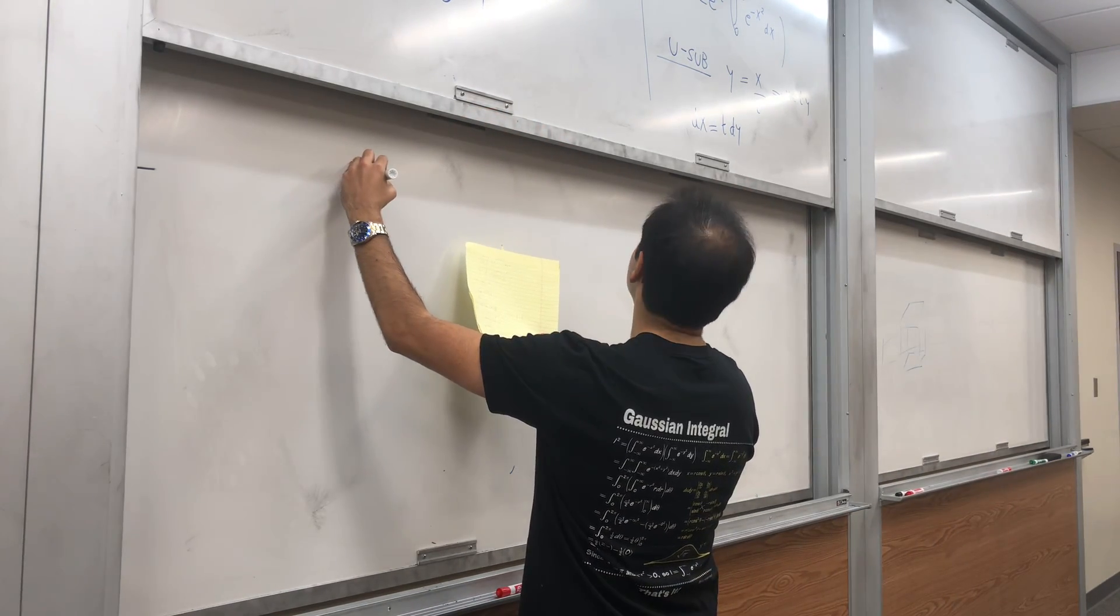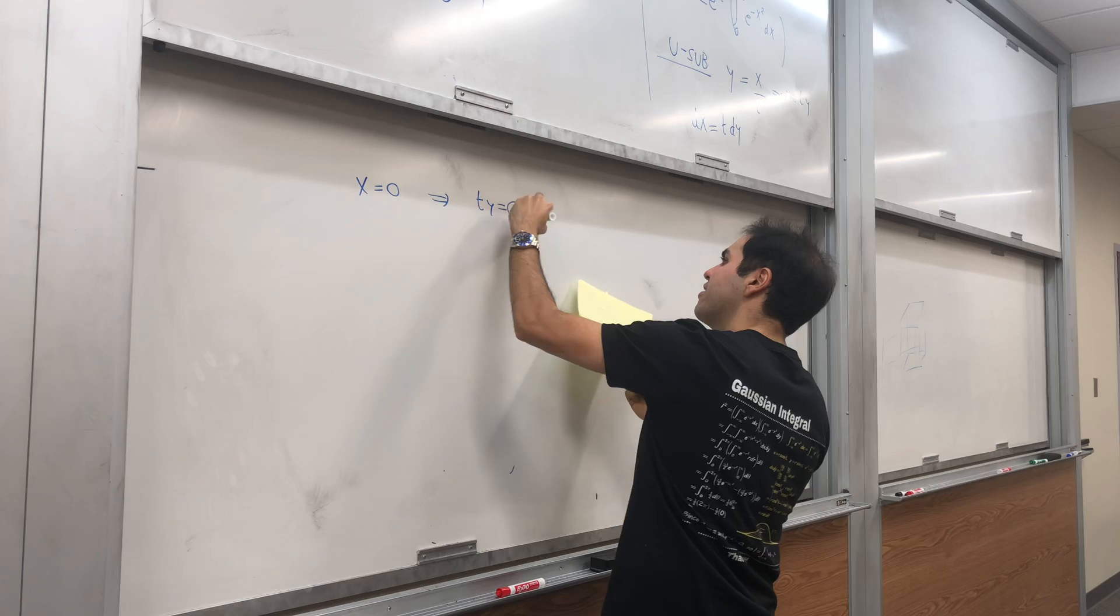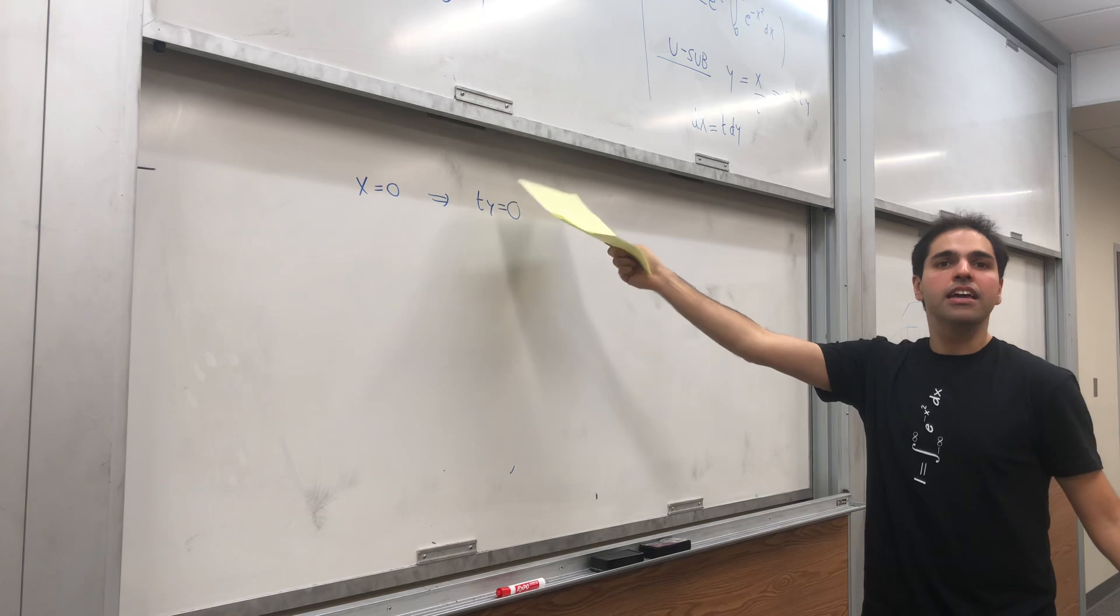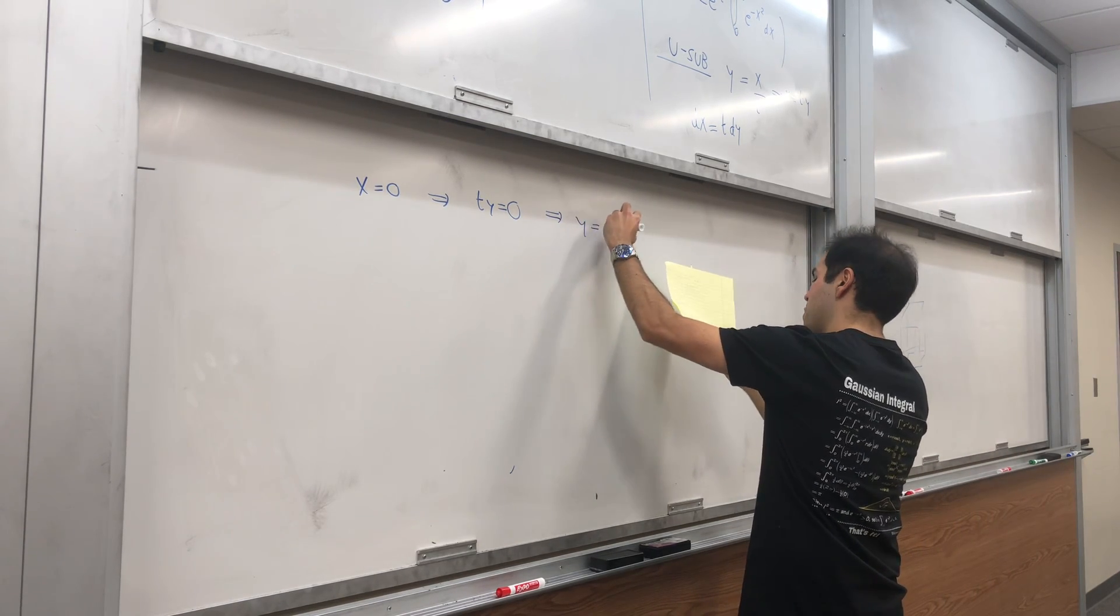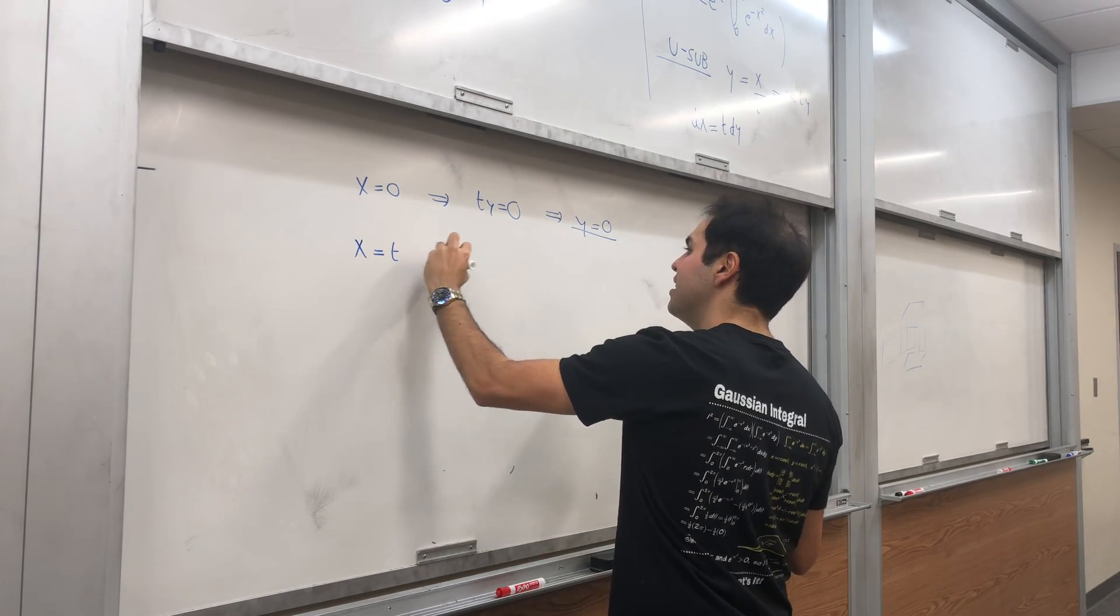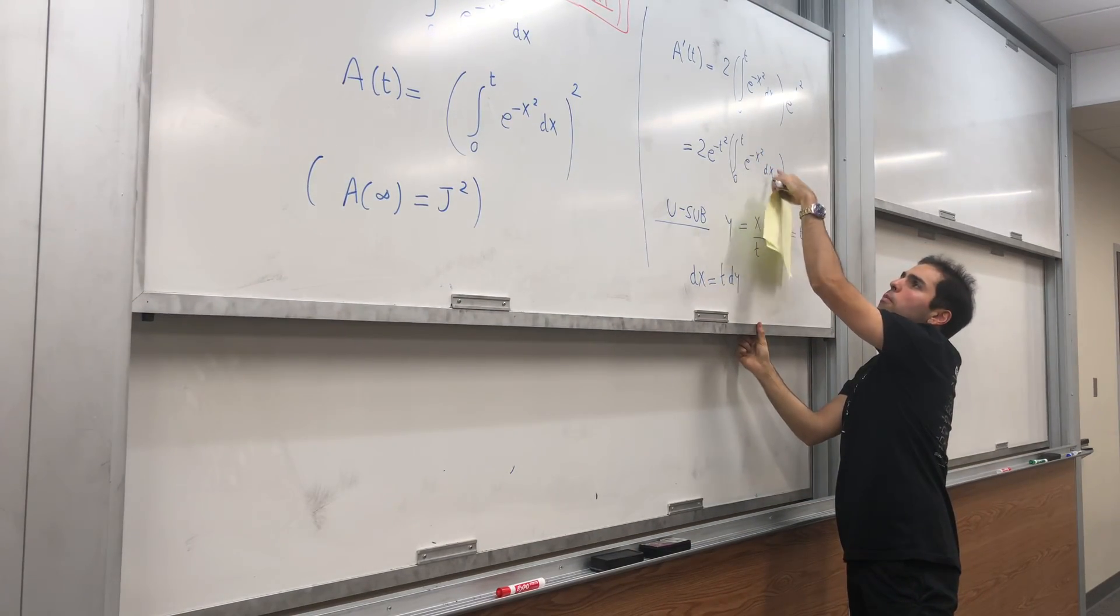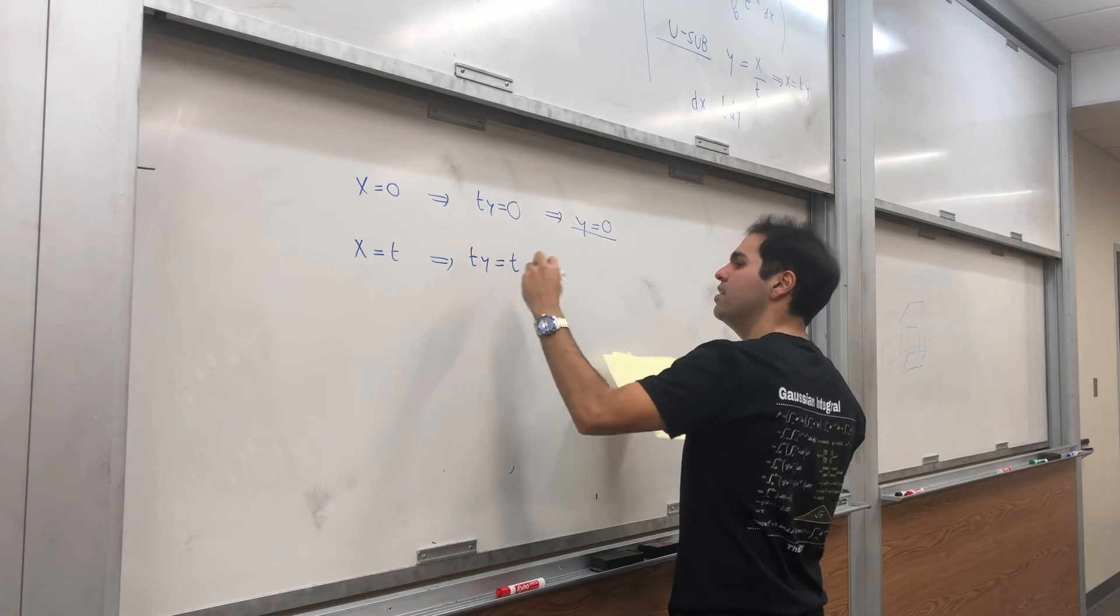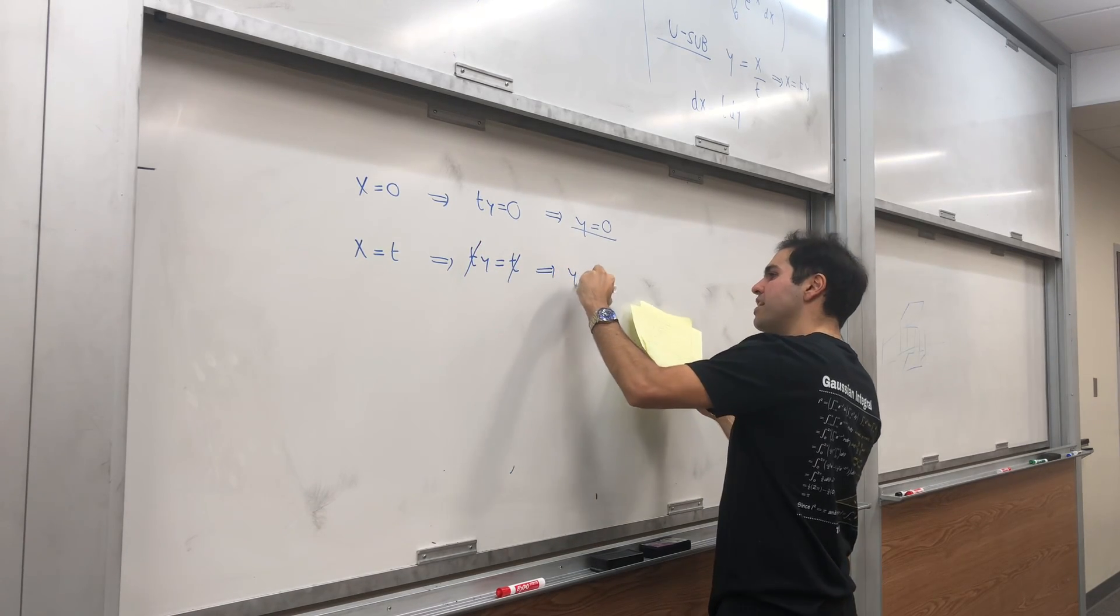And let's now do the end points. So if x equals to 0, then ty equals to 0, because x equals to ty. And while t is very big, in particular it's positive, so y has to be 0. And if x equals to t, so you see the lower point of the integral is 0, the upper point is x equals to t, then this means that ty equals to t. Again, t is very large, in particular positive, so y equals to 1.